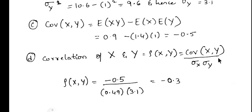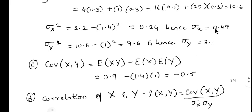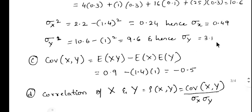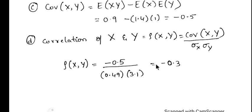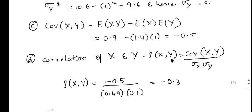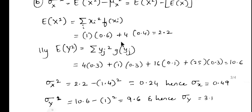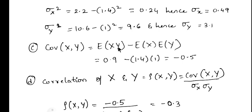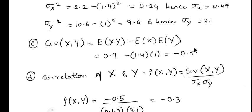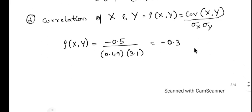Now we will calculate correlation. Correlation = covariance(x, y) divided by sigma_x times sigma_y = minus 0.5 divided by (0.49 times 3.1), which simplifies to minus 0.3. Please be careful as covariance depends on E(xy) and the values of E(x) and E(y), and correlation depends on the covariance. If you miss one step or get one step wrong, the whole sum will be wrong.